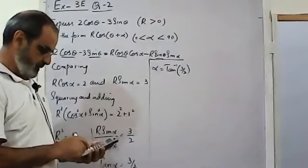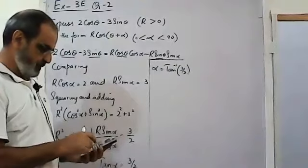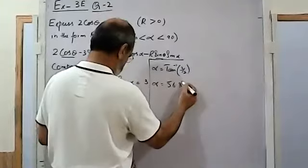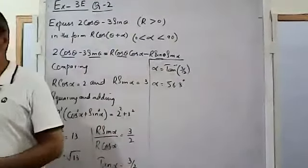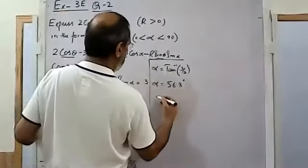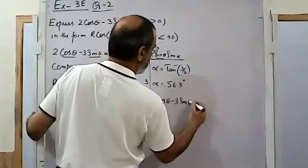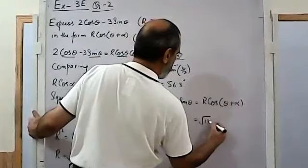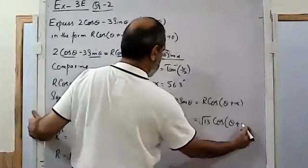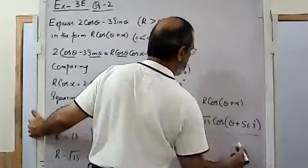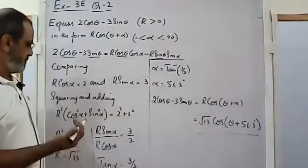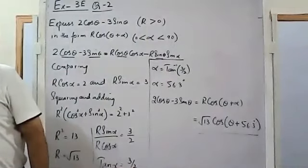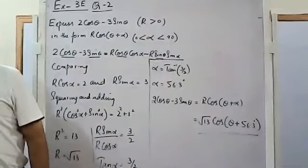Using the calculator: shift tan of 3/2 gives approximately 56.3°. So the answer to part (a) is 2cosθ - 3sinθ = √13·cos(θ + 56.3°). This is our required form, and you are familiar with how to solve it from the last lesson.